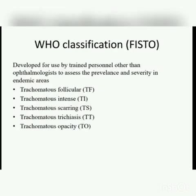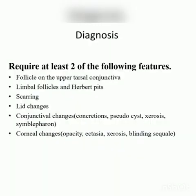Let's discuss the WHO classification. There are several stages of trachoma. Trachomatous follicular (TF) is the stage of active disease. The next stage is trachomatous intense (TI), where we see papillae — this is severe disease requiring urgent checkup. Trachomatous scarring (TS) is the stage where the infection is inactive. The next stage is trachomatous trichiasis (TT), where at least one lash is touching the globe. The final stage is corneal opacity (CO). The disease can be diagnosed if two of these features are identified.